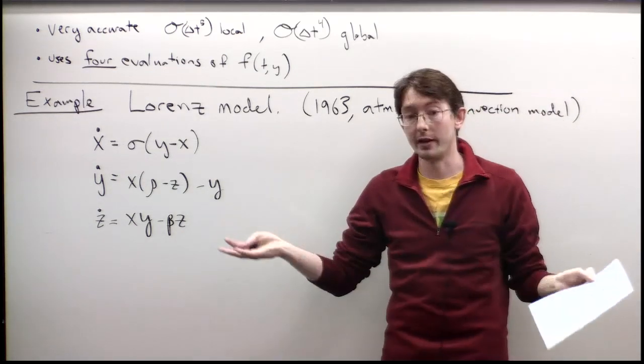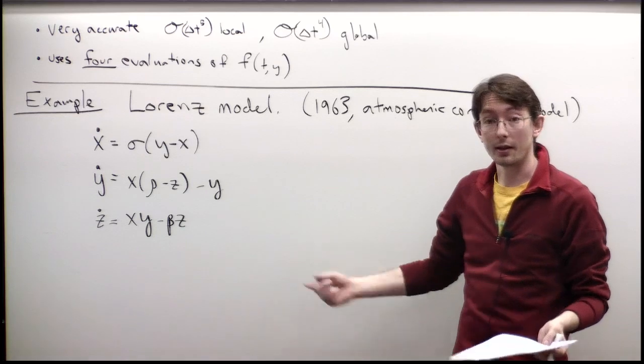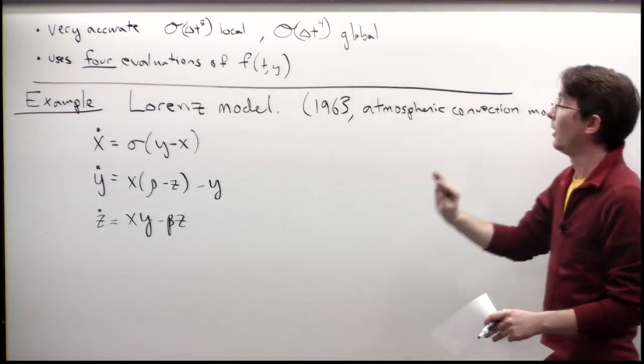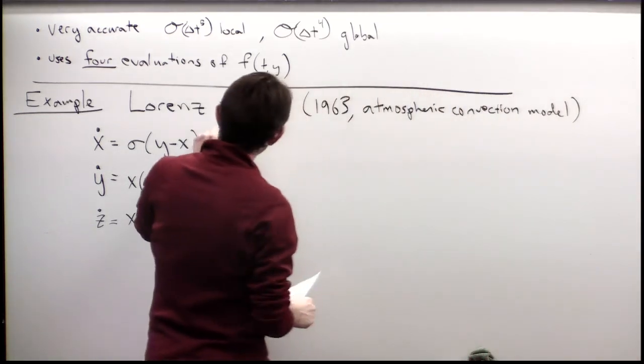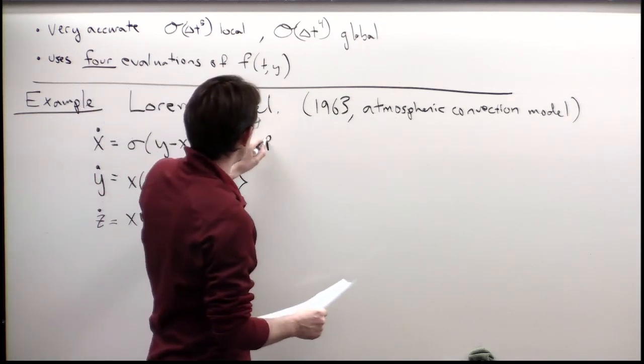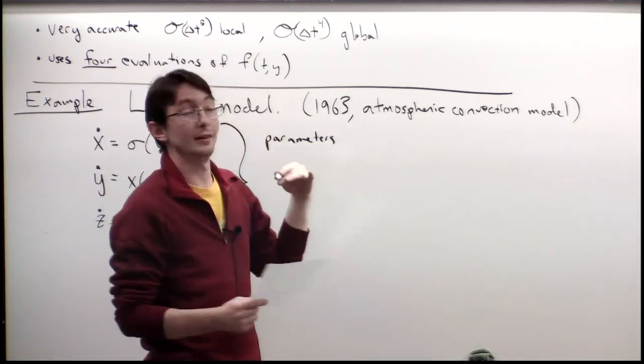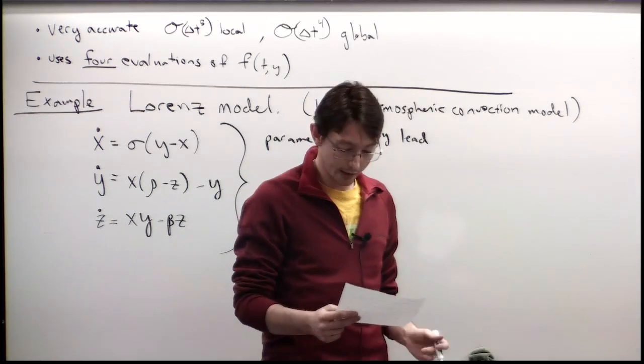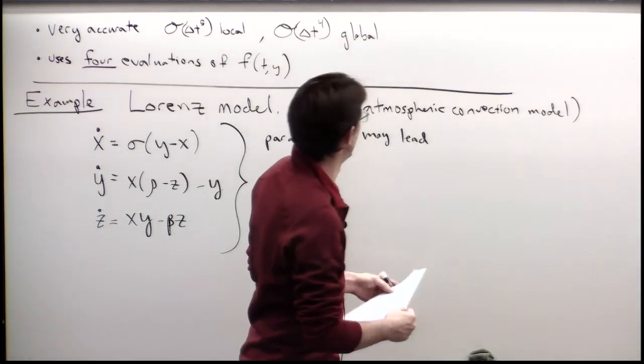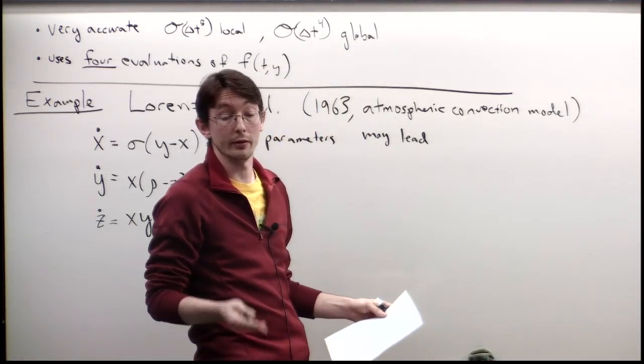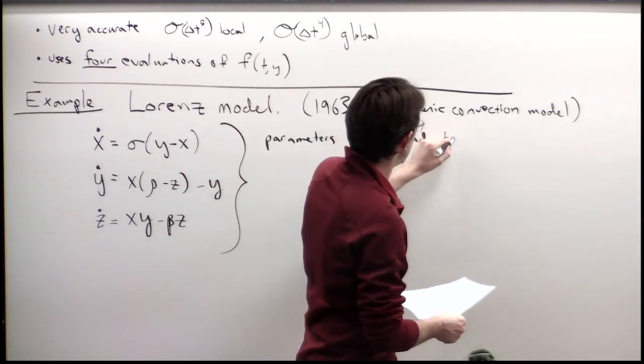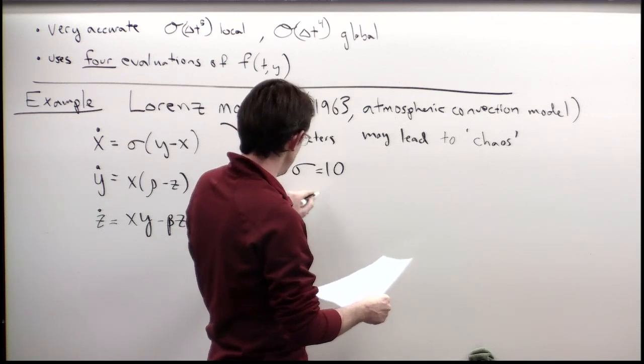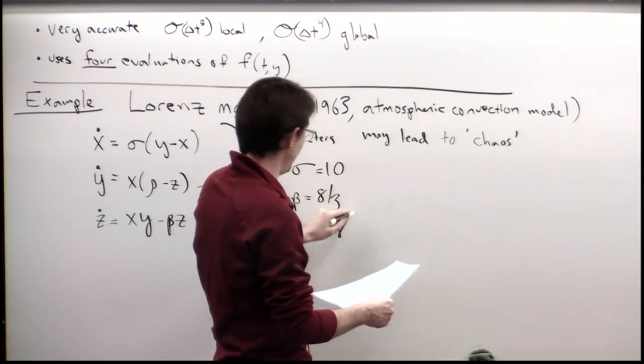He actually cooked up this simple three systems of equations to study a simplified version of atmospheric convection, which is very important for weather and climate. This is an atmospheric convection model. We might think that this is crude by the standards of today. Now we're very interested in predicting weather and climate for a very long time out. And so we have extraordinarily complex models. But this is a very simple one that he could actually study in 1963 numerically. There are some parameters in the system. There are some parameters that lead to chaos. We're going to have a gentle introduction to what chaos means. I'm not really going to talk much about it in this lecture. But we're going to start seeing this more and more over the next three lectures. Because it's profoundly important for what type of integrator you use.